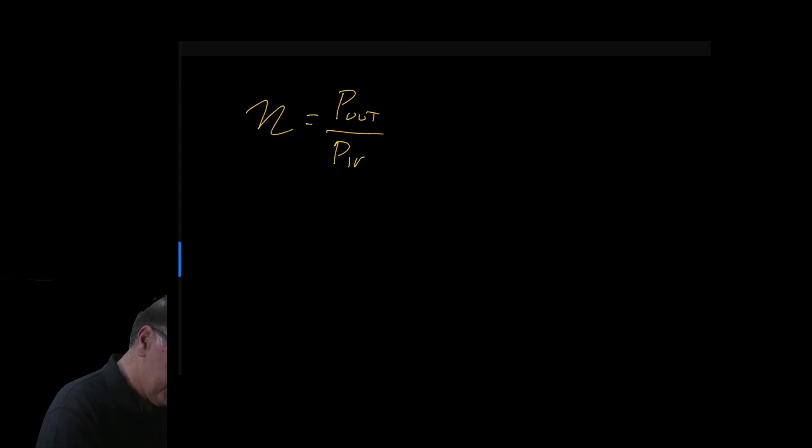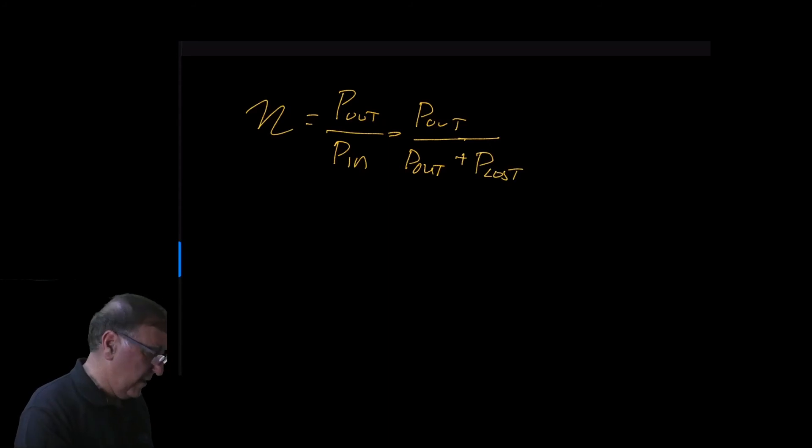So now we'll calculate efficiency. So you have eta equal to power out over power in. And so another way to write this would be power out over power out plus power loss. Going back to our power flow diagram I think you can see why that is.